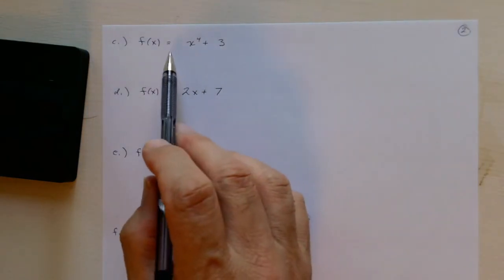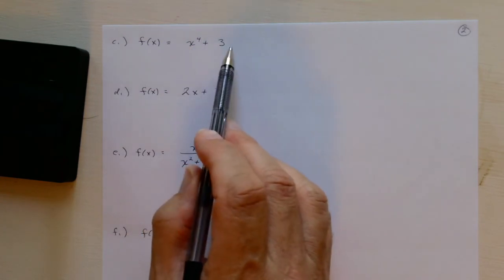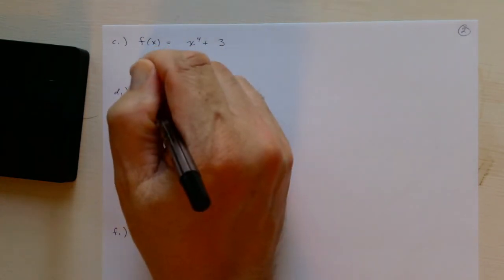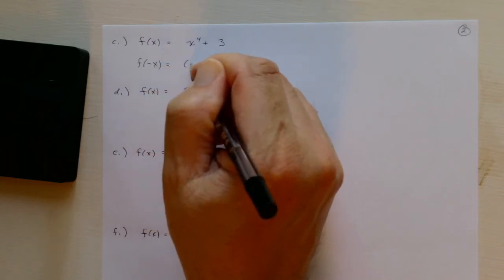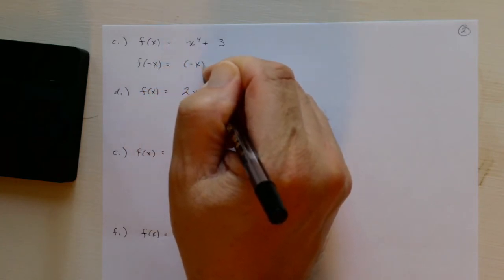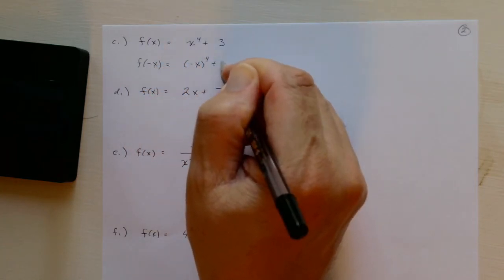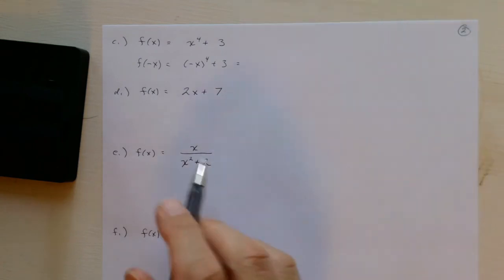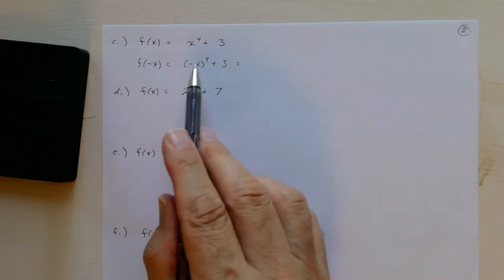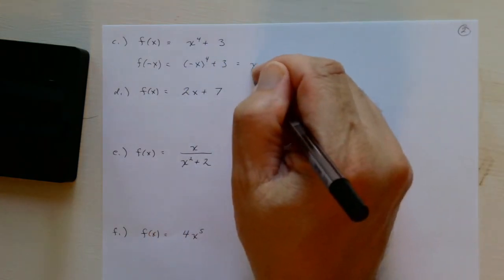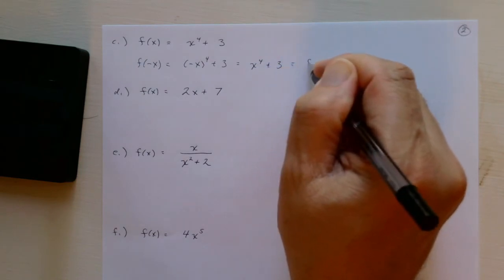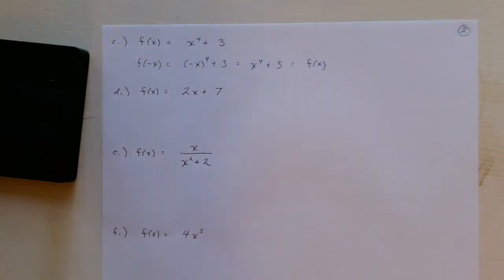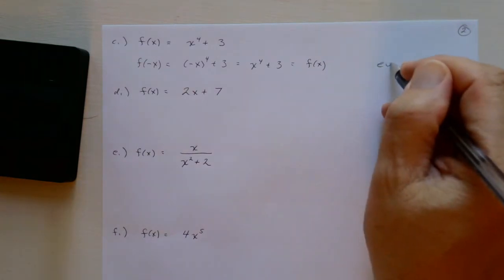For f(x) = x⁴ + 3, we compute f(−x) = (−x)⁴ + 3 = x⁴ + 3, which equals f(x). So this function is even.